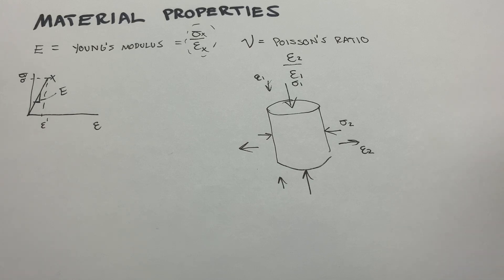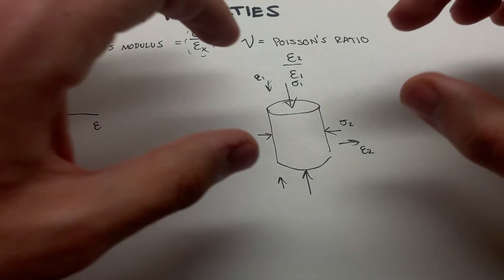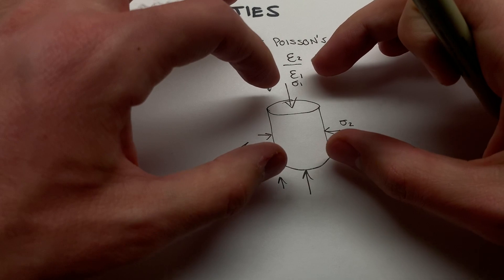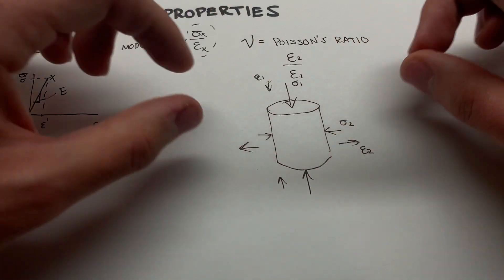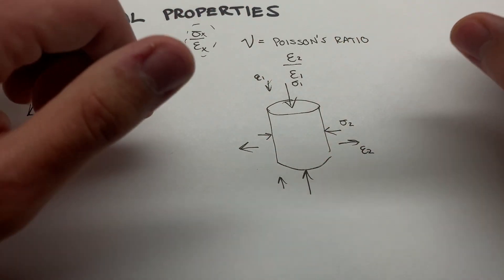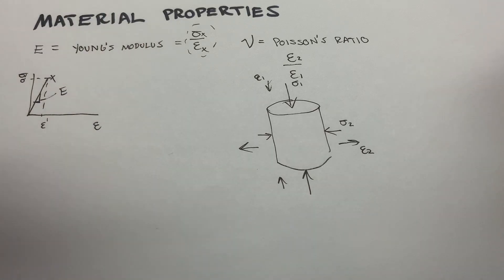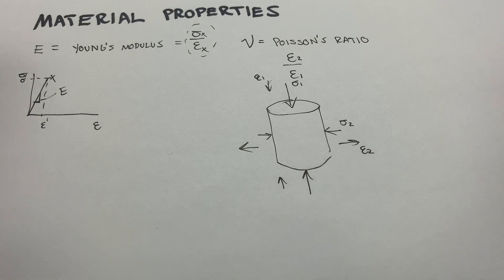For most rocks, this should be intuitive: Poisson's ratio is going to be significantly less than 1, because the rock shrinks much more in the axial direction than it bulges outward radially. For a typical sandstone or sedimentary rock, this might be anywhere from 0.2 to 0.4, in that really low range.